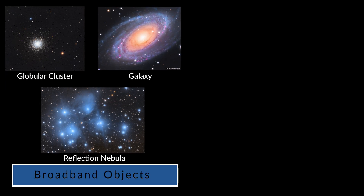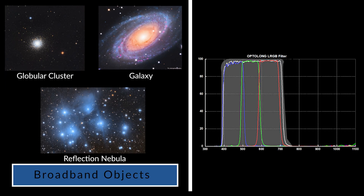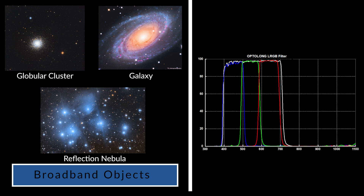Deep sky objects such as galaxies, star clusters, and reflection nebula emit light mostly within the visible light spectrum — what you and I can see with our naked eye — which is rather broad. For these broadband objects you want to use broadband filters. So for monochrome cameras, an LRGB filter, and for a one-shot color camera or a DSLR, a CLS filter, or no filter at all if you live under dark skies.